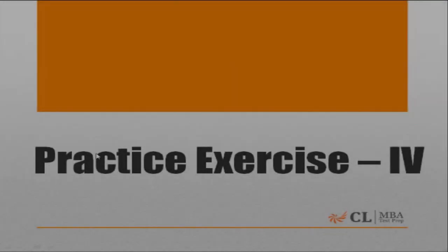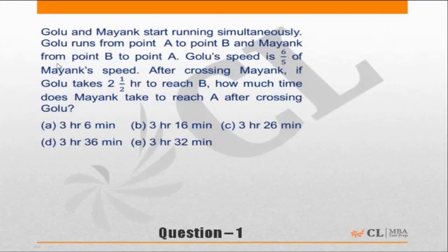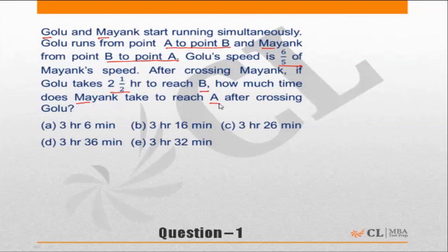Practice exercise 4 of the Time Speed Distance funda book. Question 1: Golu and Mayang start running simultaneously. Golu runs from point A to B and Mayang from point B to A. Golu's speed is 6/5 of Mayang's speed. After crossing Mayang, Golu takes 2.5 hours to reach B. How much time does Mayang take to reach A after crossing Golu?